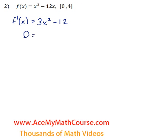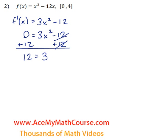Now we're going to set this equal to 0 and solve for x. We can add 12 to both sides of the equation. 0 plus 12 is 12, which equals 3x squared.